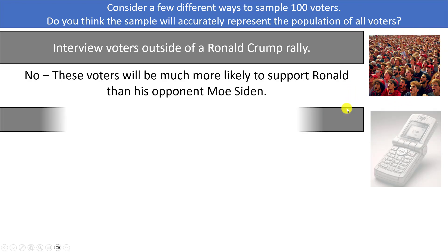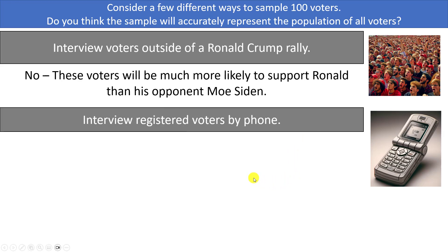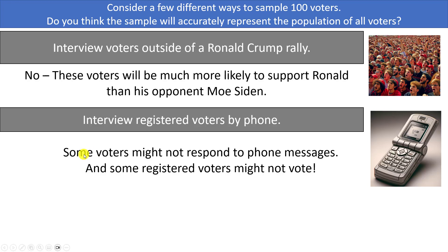So interviewing outside the rally is probably not the best idea. Maybe instead we get a list of phone numbers and call or text some individuals to ask who they're supporting. This sounds better, but there can still be ways your sampling method skews results. It could be that Ronald Crump supporters don't answer calls from unknown numbers. A certain type of voter might be both more likely to support one candidate and more or less likely to answer a phone call. Not everyone has a phone, and some registered voters might not even turn out to vote.